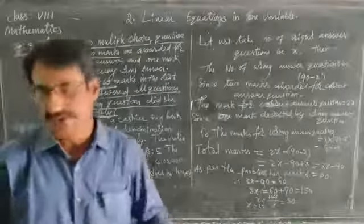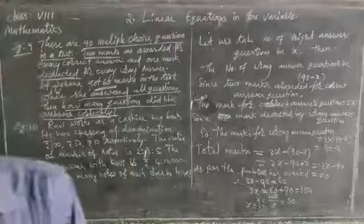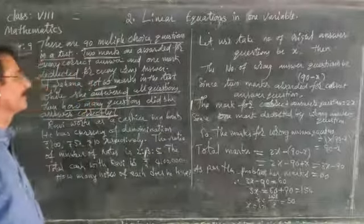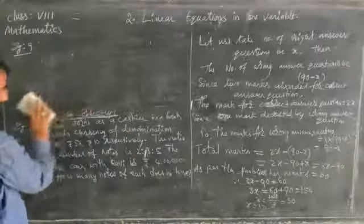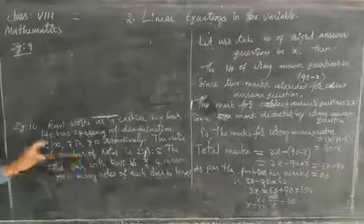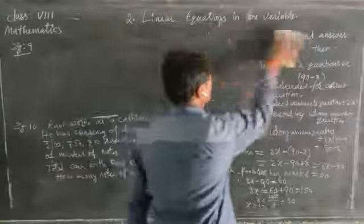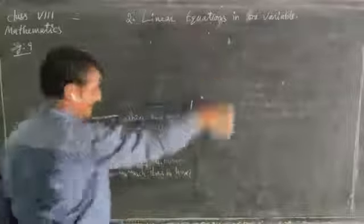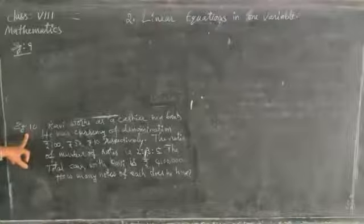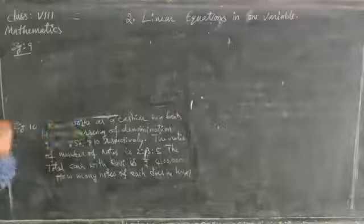Do you understand this one? Okay, next example. Ravi works as a cashier in a bank. He has currency of denomination 100 rupees, 50 rupees, and 10 rupees respectively.